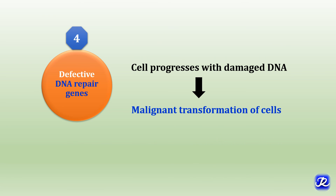The fourth mechanism of carcinogenesis is defective DNA repair genes. If DNA repair genes are defective, the cell progresses with damaged DNA, which ultimately leads to malignant transformation of cells.